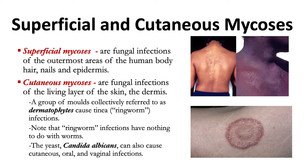Superficial mycosis are fungal infections of the outermost areas of the body, such as hair, fingernails, toenails, and the dead layers of skin (the epidermis). Cutaneous mycosis are fungal infections of the living layers of the skin, or dermis. A group of molds collectively called dermatophytes cause tinea infections, often referred to as ringworm infections — which have nothing to do with worms. Tinea infections are named by the anatomical location: tinea pedis (athlete's foot), tinea unguium (nails), tinea capitis (scalp), tinea barbae (face and neck), tinea corporis (trunk), and tinea cruris (groin).